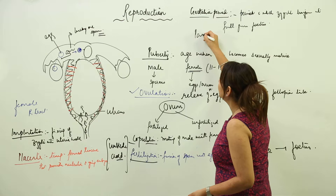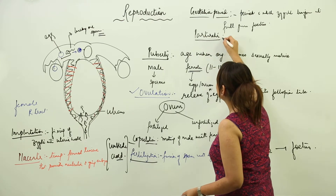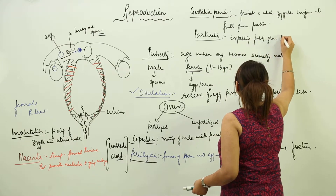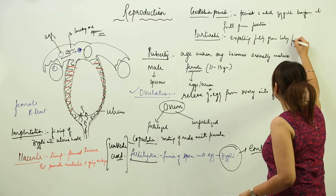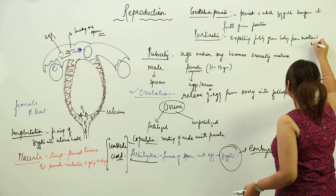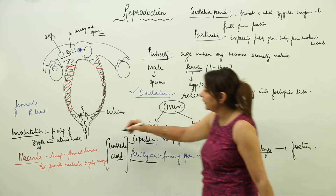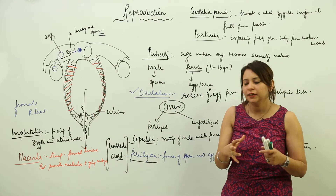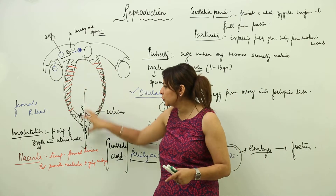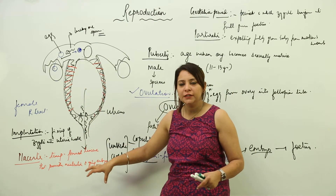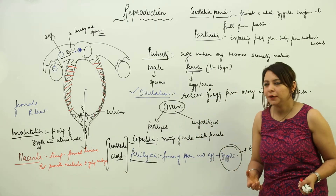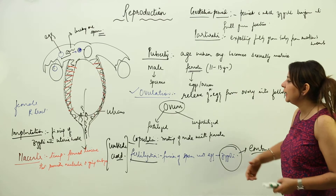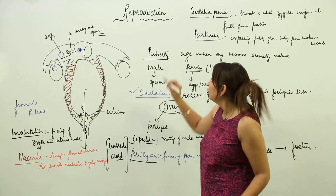After the gestation period, when the fetus is fully grown, parturition occurs. Parturition is the expelling of the fully grown baby from the mother's womb. The uterine wall contracts and the baby is expelled through the vaginal tract and delivered. The newly born baby is the result of all these events that occur after ovulation.